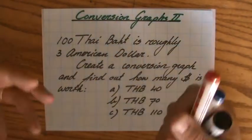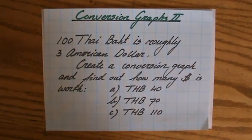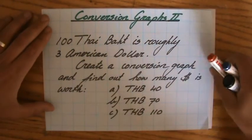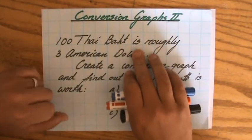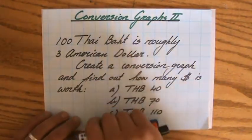At ExplainingMaths.com, we're still talking about conversion graphs, which are graphs in real-life situations. I promised we're going to create our own. I said, well, 100 Thai Baht—you have to go to Thailand one day, it's a beautiful country. I lived there for a couple of years, fantastic country.